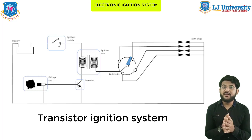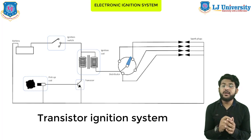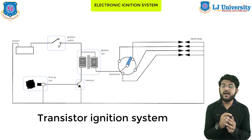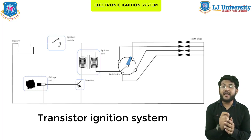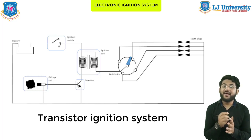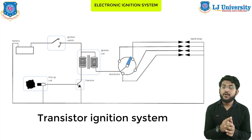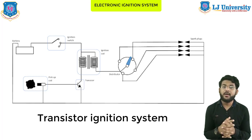Looking at the transistorized ignition system diagram, an additional component is the pickup coil. This component serves to detect the ignition timing. It works by flowing an electric wave in which there is a voltage drop; that voltage drop determines the ignition timing. This is also called electronic ignition timing control.